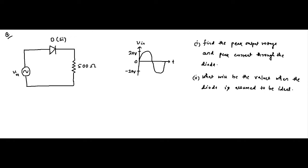Here is the question that we have. We have a circuit with a silicon diode connected to an AC voltage with a peak value of 20 volts. We have to find out the peak output voltage appearing across the 500 ohm load resistance, and the second part is to find out the peak current.